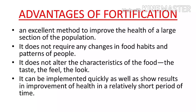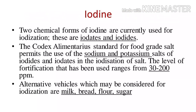For iodine fortification, iodine is used in two chemical forms: iodates and iodides. We use sodium and potassium salts of iodates and iodides. The range used is 30 to 200 ppm. Alternative vehicles include milk, bread, flour, and sugar.